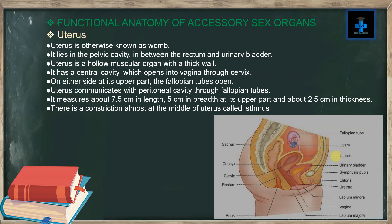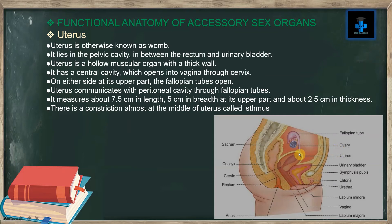The uterus is a hollow muscular organ with a thick wall. It has a central cavity, which opens into the vagina through the cervix. On either side at its upper part, the fallopian tubes open.